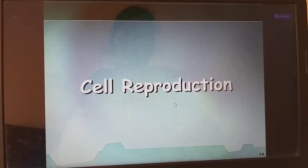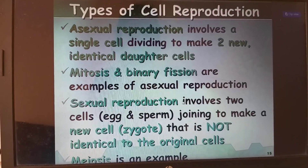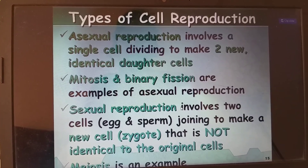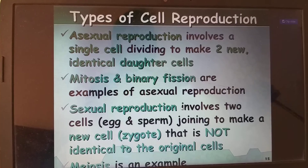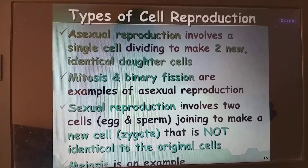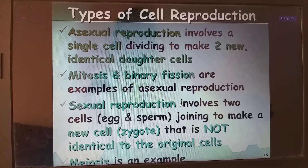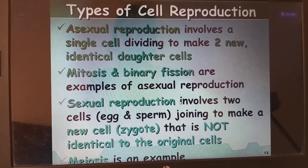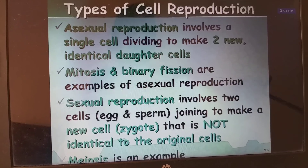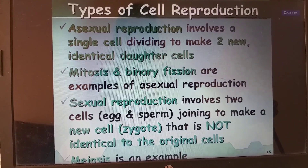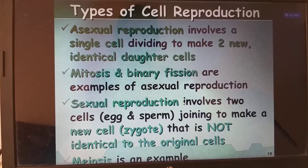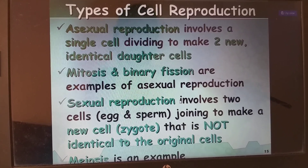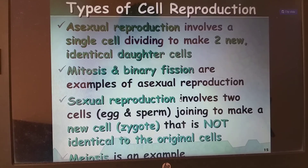Coming to cell reproduction: asexual reproduction involves a single cell dividing to make two new identical daughter cells. Mitosis and binary fission are examples of asexual reproduction — no male and female partners are involved. Sexual reproduction involves two cells, egg and sperm, joining to make a new cell called a zygote, which is not identical to the original cells. Meiosis is an example.